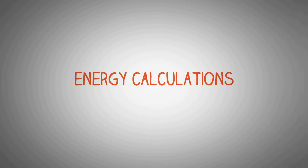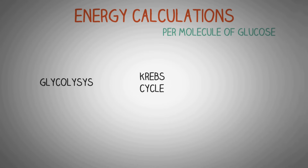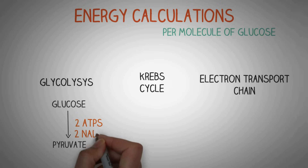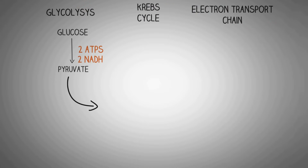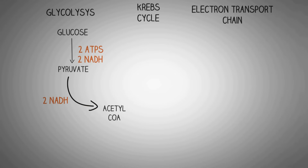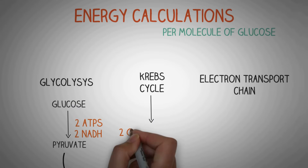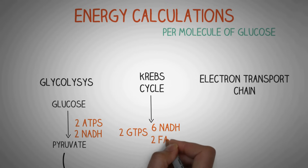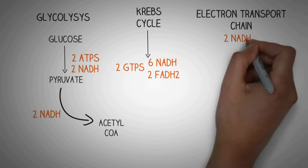Now let's talk about the energy calculations per molecule of glucose that passes through glycolysis, the Krebs cycle, and the electron transport chain. In glycolysis, when glucose is converted to pyruvate, we get a net of two ATPs and two NADH. When pyruvate is converted to acetyl-CoA, we get two more NADH. In the Krebs cycle, one cycle gives two GTPs (energy equivalent to two ATPs), six NADH, and two FADH2.